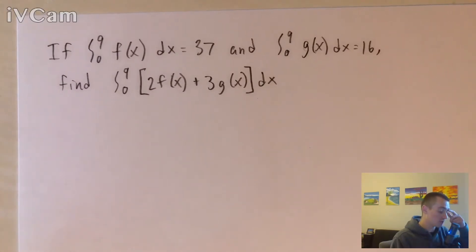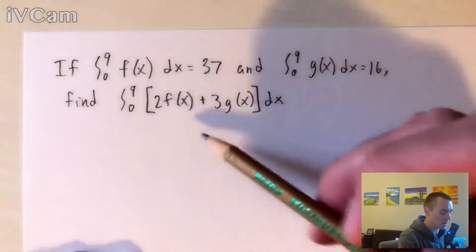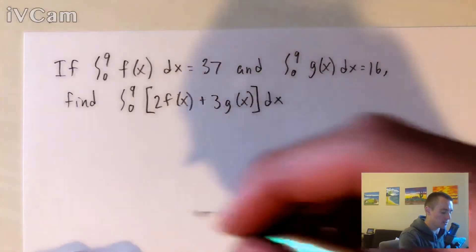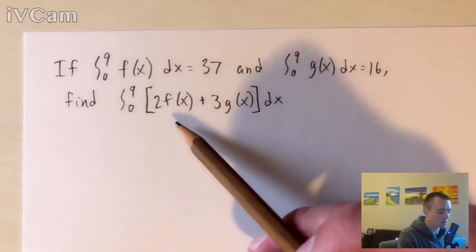So what we wanna do, first of all, is using those integral properties from my study guide, we can actually split this integral into two smaller integrals, which are a little bit easier to deal with. So the property that I'm referring to here is the one that says